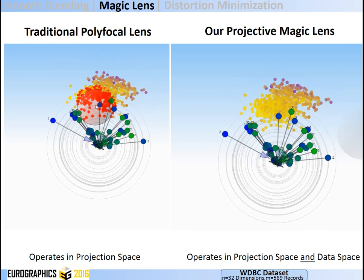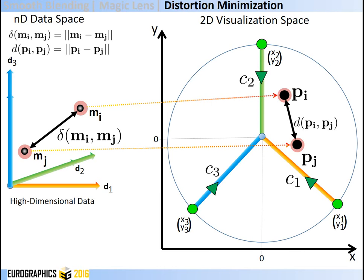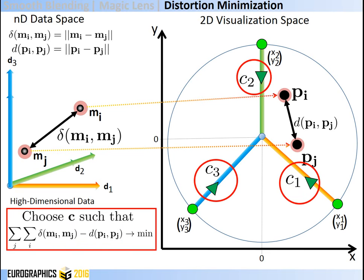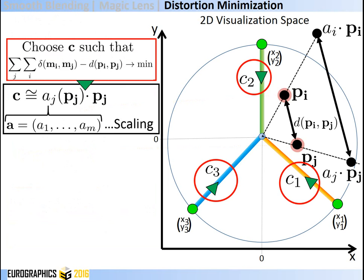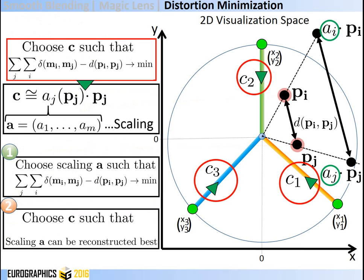The third application is distortion minimization by choosing appropriate projective coefficients. The distance between two data points should be preserved under projection, but in practice this is often not the case. We look for projective coefficients C that minimize distortion — a non-linear problem. Since changing C is equivalent to scaling projection point P by scaling vector A, in the first step we compute the vector of scalings A that minimizes distortion, then in the second step choose C such that A can be reconstructed best.